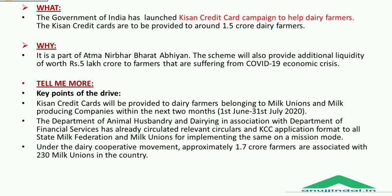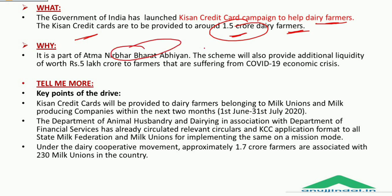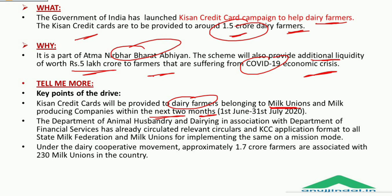The Kisan Credit Card campaign aims to help dairy farmers, with KCC cards to be provided to around 1.5 crore dairy farmers. This campaign is part of the Atmanirbhar Bharat Abhiyan and will also provide additional liquidity of Rs. 5 lakh crore to farmers suffering from the COVID-19 economic crisis. These Kisan Credit Cards will be provided to dairy farmers belonging to milk unions and milk producing companies within the next 2 months.